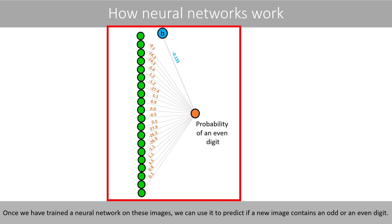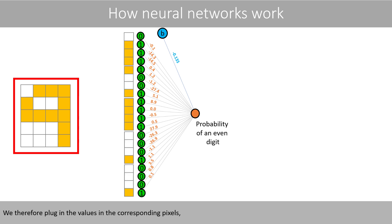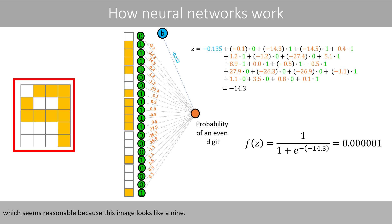Once we have trained a neural network on these images, we can use it to predict if a new image contains an odd or an even digit. Suppose that we use the trained network to predict if this image contains an odd or an even digit. We plug in the values in the corresponding pixels and do the math. Since the probability is less than 0.5, the network predicts that the image contains an odd digit, which seems reasonable because this image looks like a 9.